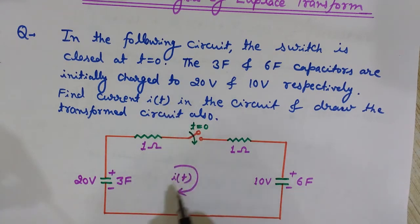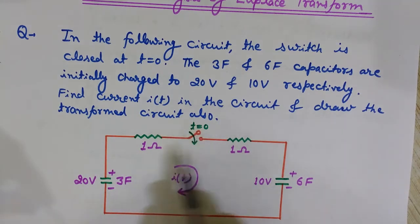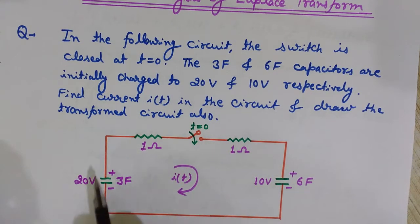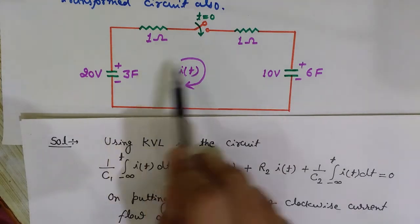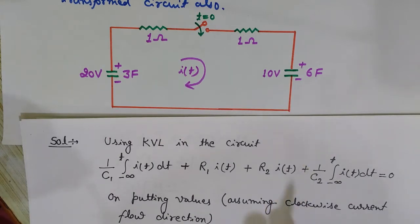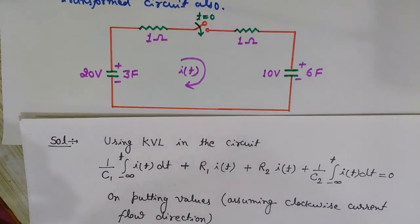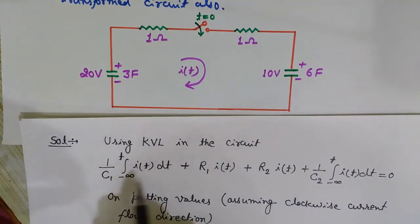I want to find the current I(t) flowing in this circuit and also draw its S-domain equivalent. Although we could solve this circuit without Laplace transform, it becomes much easier using it — we don't have to deal with integrals directly. So we will use Laplace transform.